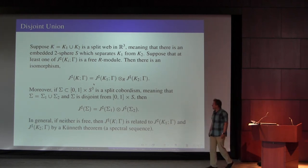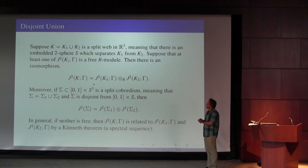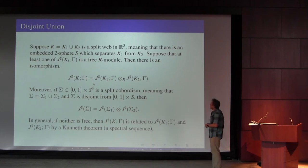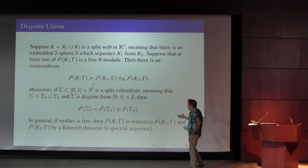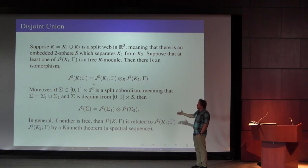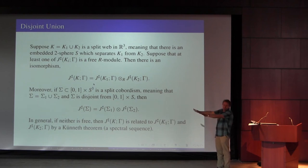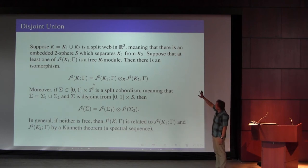We've got this direct sum decomposition according to one-sets of our graph — and so far I haven't used that the graph was in the three-sphere; it's just any graph in any three-manifold that gives this decomposition. This γ-prime Floer homology group decomposes into one-sets. As I mentioned, this Floer homology group has many properties analogous to the ordinary one. The simplest property is that if you have a split graph — there's a two-sphere that separates the graph into two pieces — then assuming one of these pieces is free, there's a tensor product decomposition.